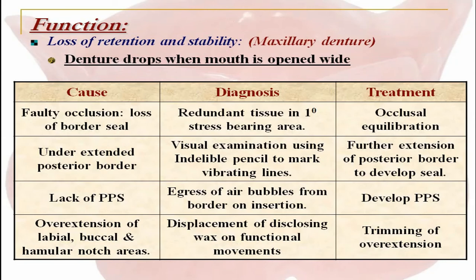The next major concern is function. The main problem regarding function is the loss of retention and stability of the maxillary and mandibular dentures. For maxillary dentures, the denture drops when the mouth is opened wide. The cause could be faulty occlusion or loss of border seal. The diagnosis is mainly with the presence of redundant tissue in the primary stress bearing area, and treatment is occlusal equilibration. If under-extended posterior border is the cause, it is diagnosed by visual examination using indelible pencil to mark the vibrating line, and treatment is further extension of the posterior border to develop the seal.